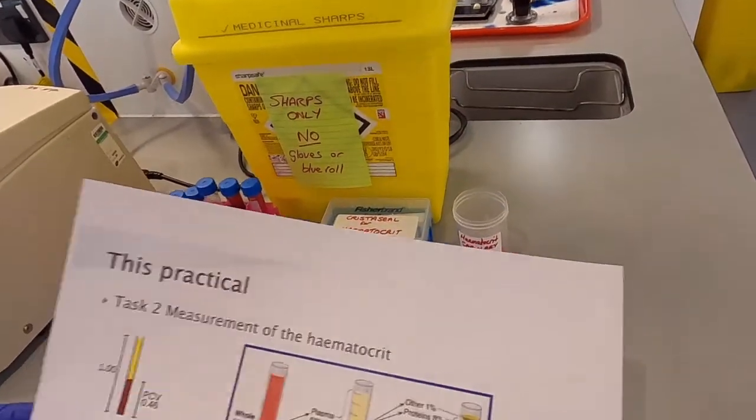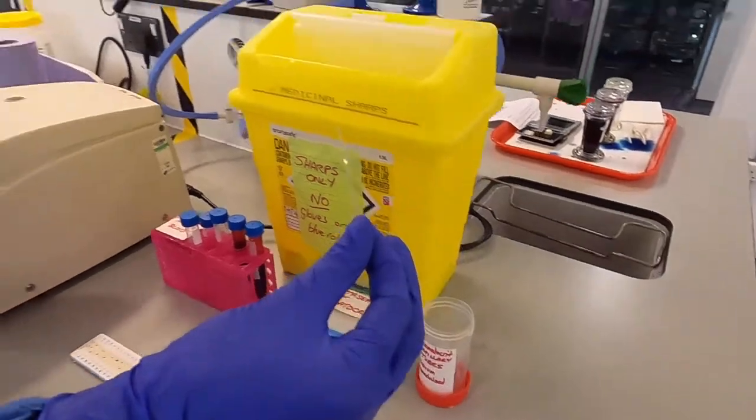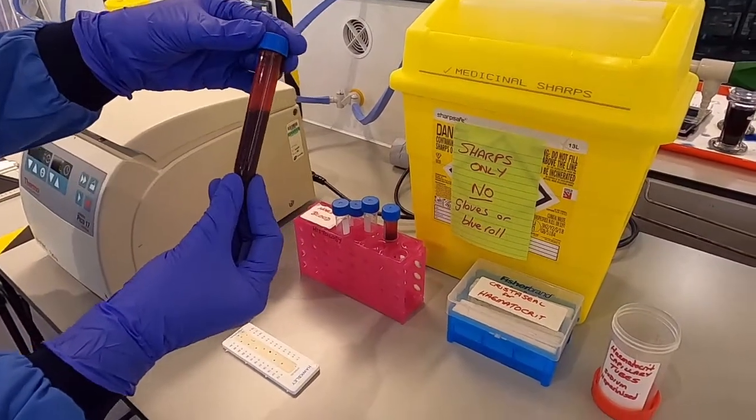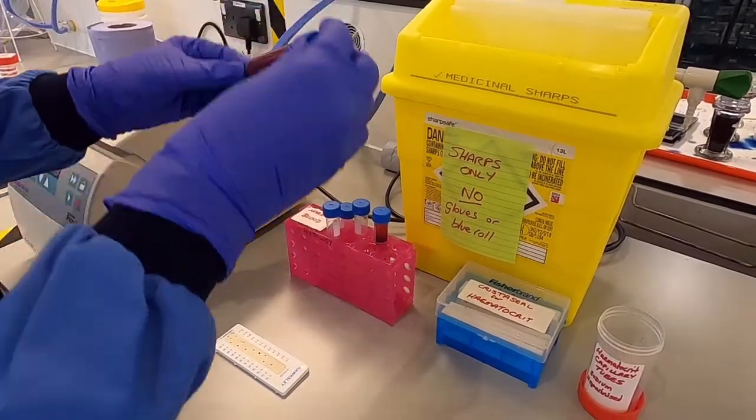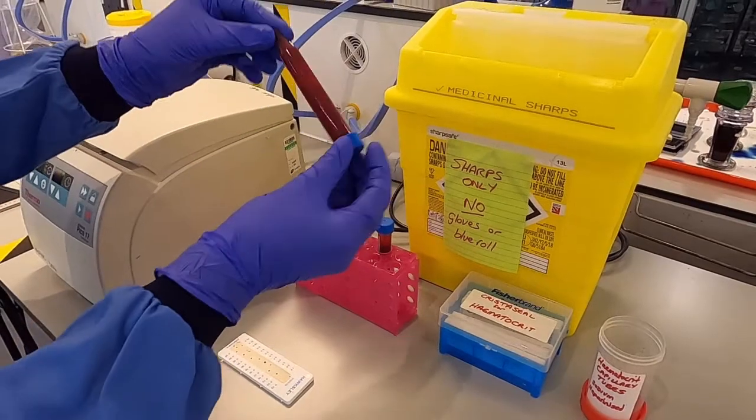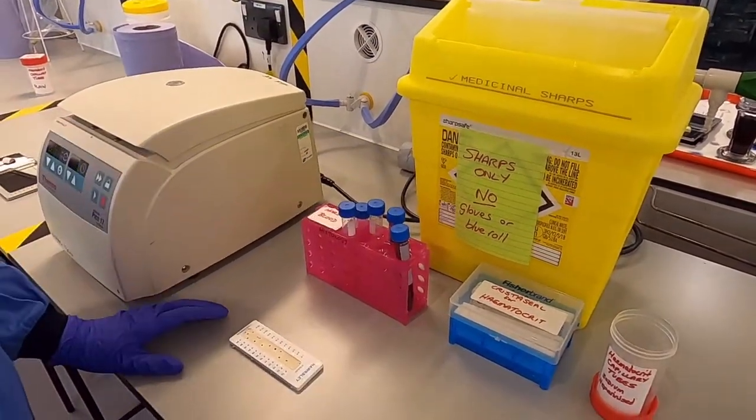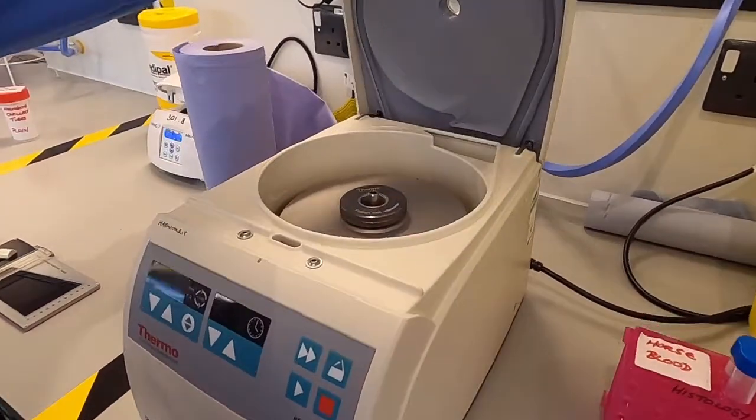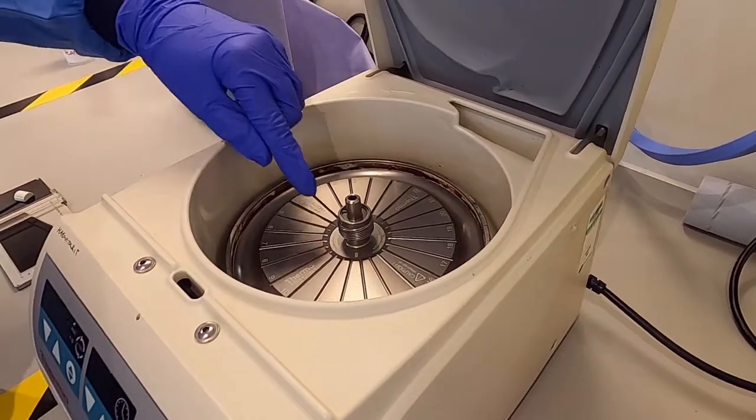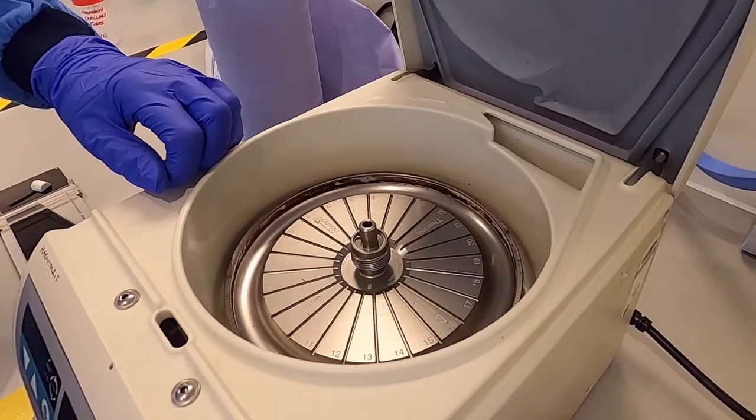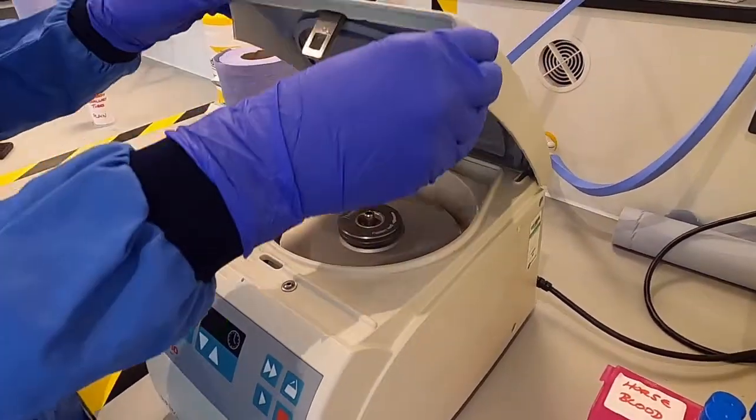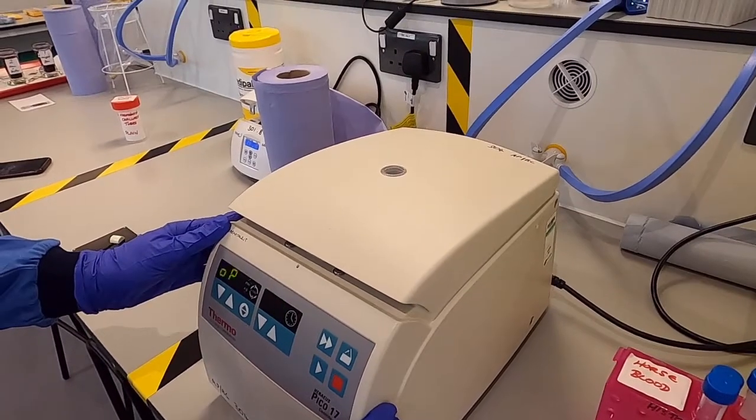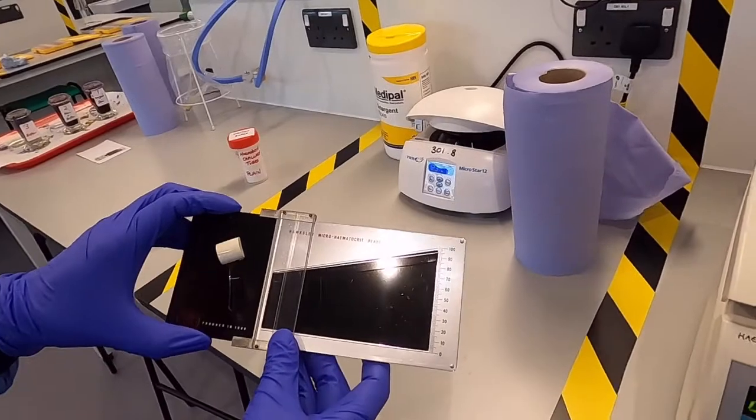So to measure the hematocrit we need our capillary tubes, our horse blood which has sat in the tube for a while and separated out, so we'll need to just invert this tube a few times to make sure that our blood is nice and well mixed. And then once we have our blood sample in our capillary tubes we're going to use the hematocrit centrifuge and pop our capillary tubes into the slots on our centrifuge. We'll put the lid on, make sure that's screwed on tight, then the tubes will spin for two minutes at 12,000 rpm. And then we'll look at the readings using our hematocrit reader.